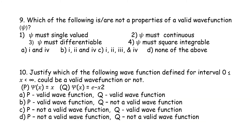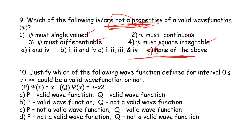Question 9: Which of the following is NOT a property of a valid wave function ψ? The properties are: ψ must be single-valued, differentiable, continuous, and square-integrable. The answer is none of the above — all listed are required properties.